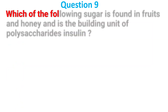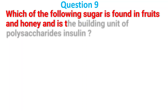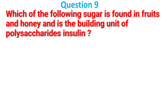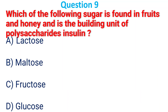Which of the following sugar is found in fruit and honey and is the building unit of the polysaccharide inulin? A. Lactose; B. Mantose; C. Fructose; D. Glucose. The answer is C, fructose.